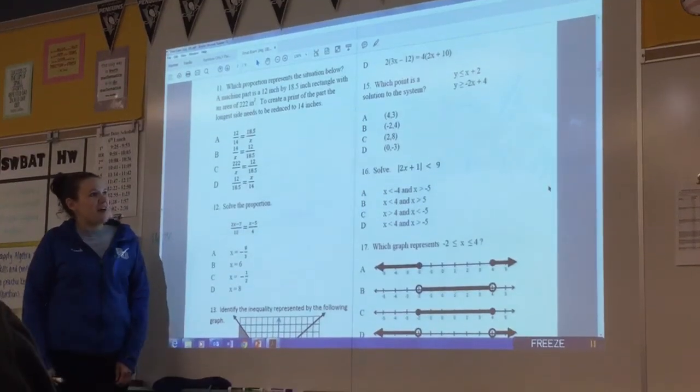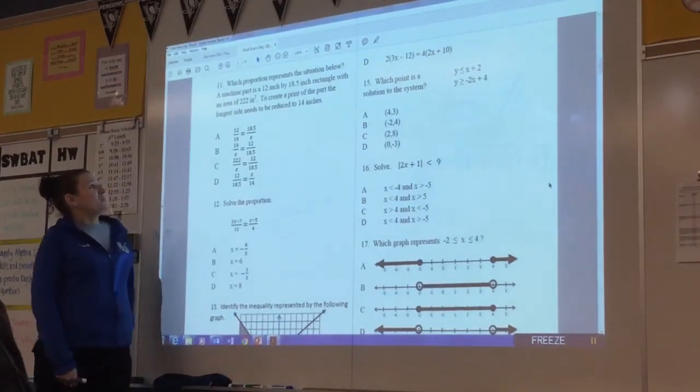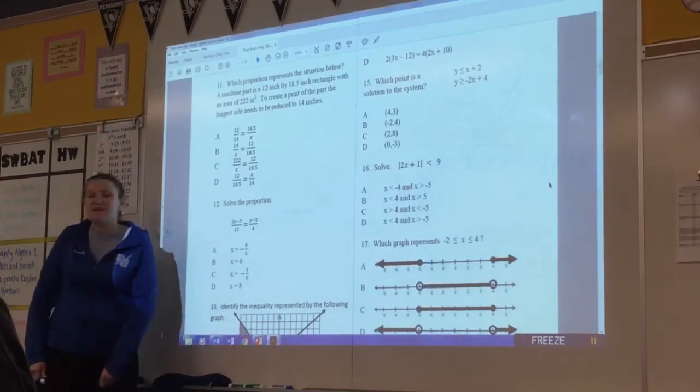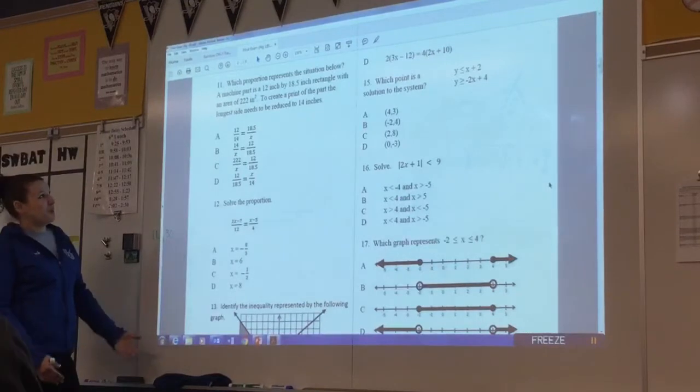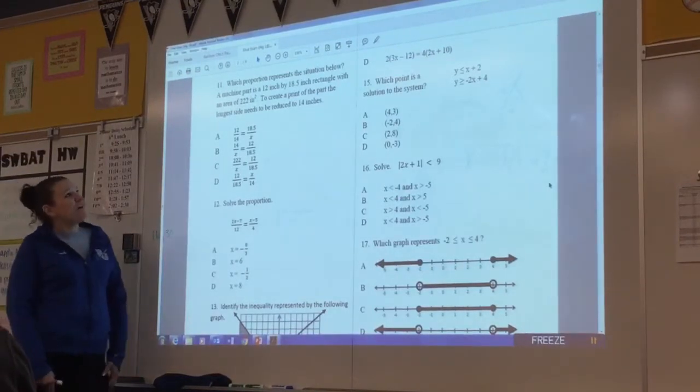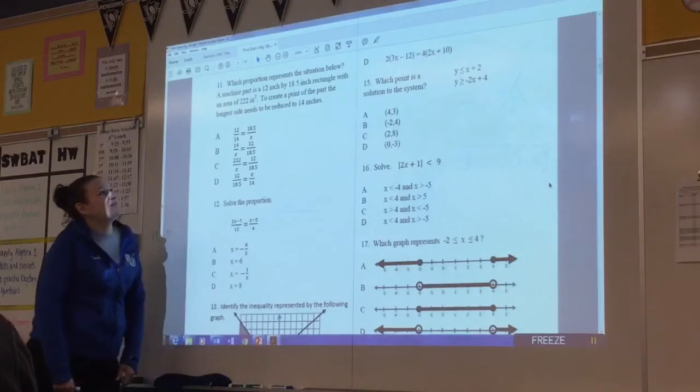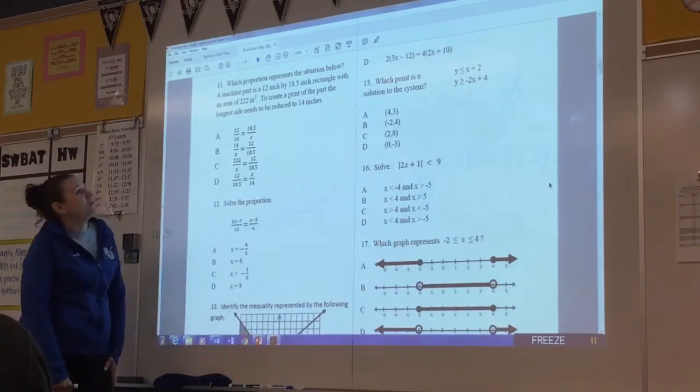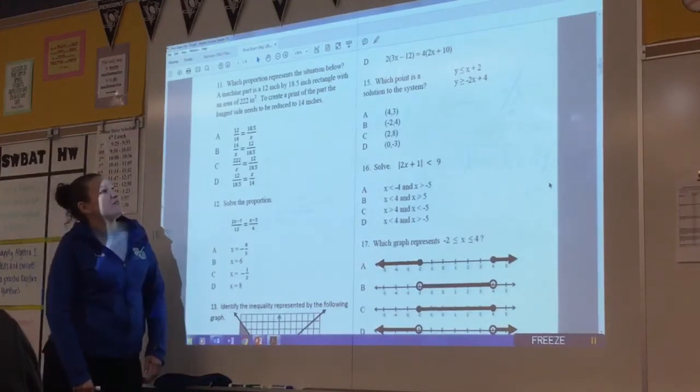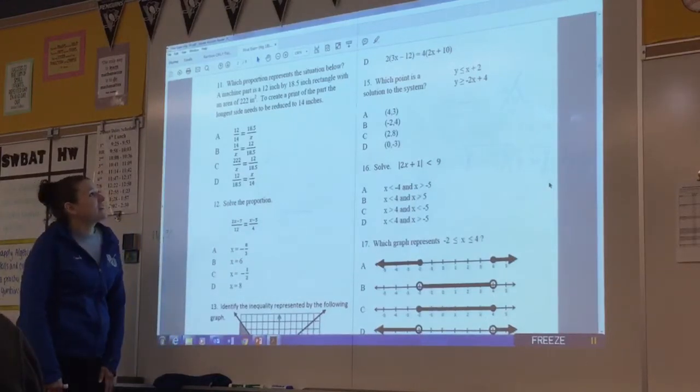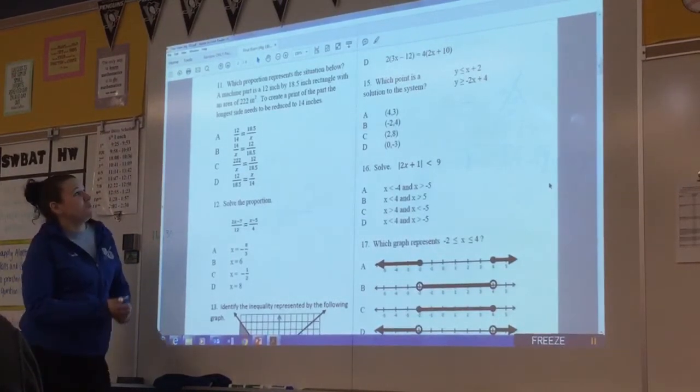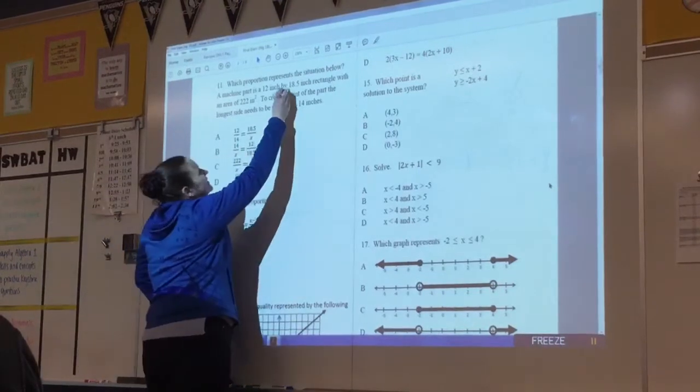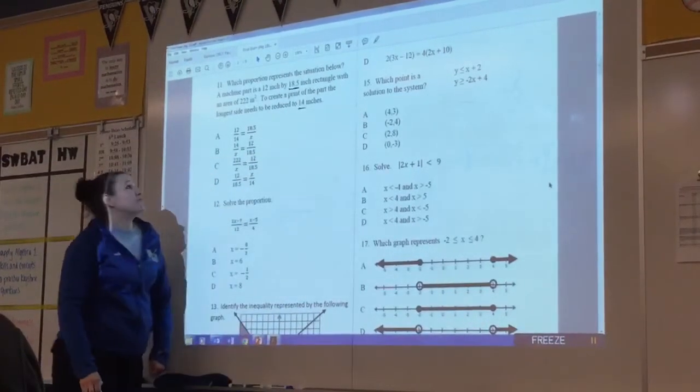So we're going to have a couple more problems right now. First one I'm going to start with is 11. We'll just read it and see if we can see which one is set up correctly. So which proportion represents the situation below? The machining part is a 12 inch by 18.5 inch rectangle with an area of 222 inches squared. To create a print of the part the longest side needs to be reduced to 14 inches. So the first thing, the longest side needs to be reduced. So the longest side we're dealing with is 18 and needs to be reduced to 14.